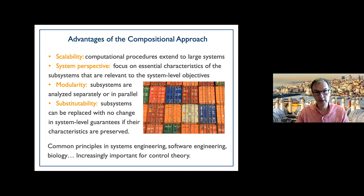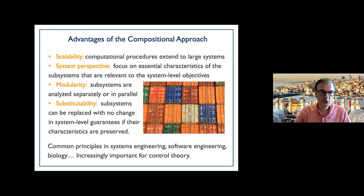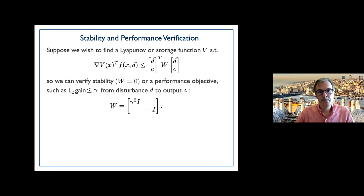Another byproduct is substitutability: you can replace a subsystem with another one, and as long as the new one has the desired properties, the overall system-level guarantee is preserved. This can be visualized with shipping containers — you can take one out, put a new one in, and they fit together. These are of course common principles in systems engineering, software engineering, and biology, and they are becoming important for control theory as we deal with larger and larger systems.